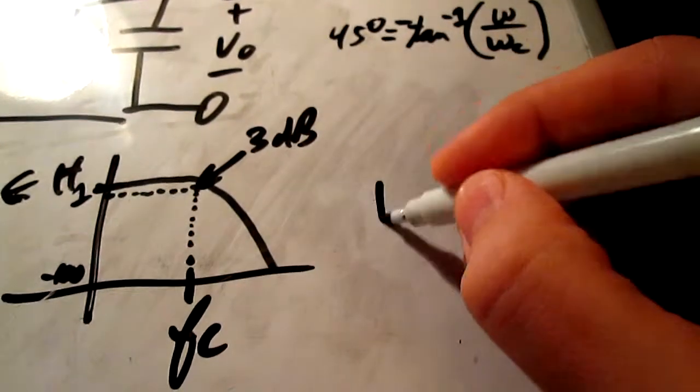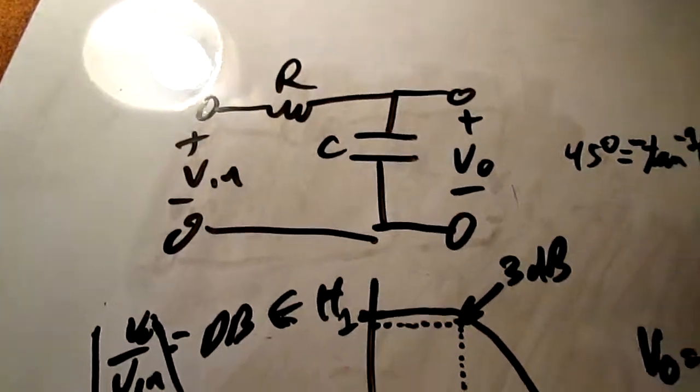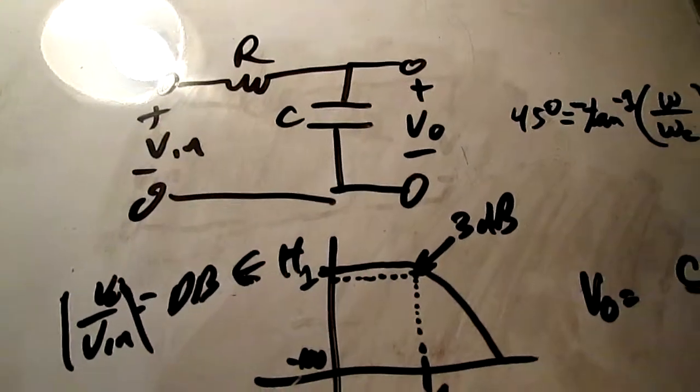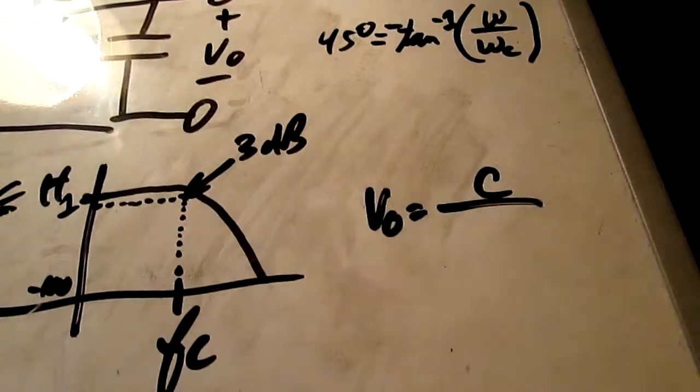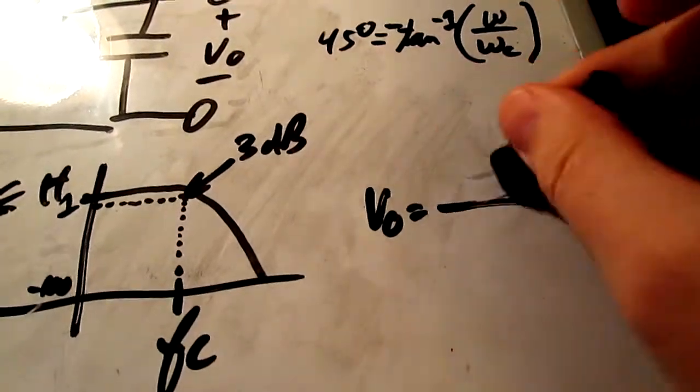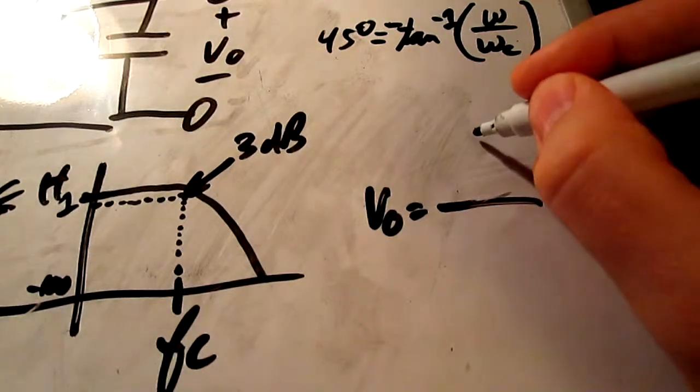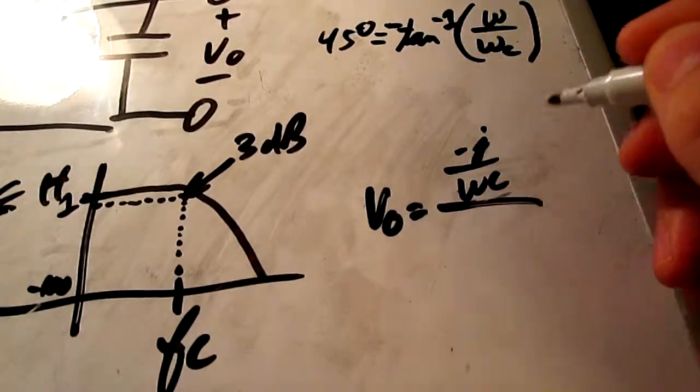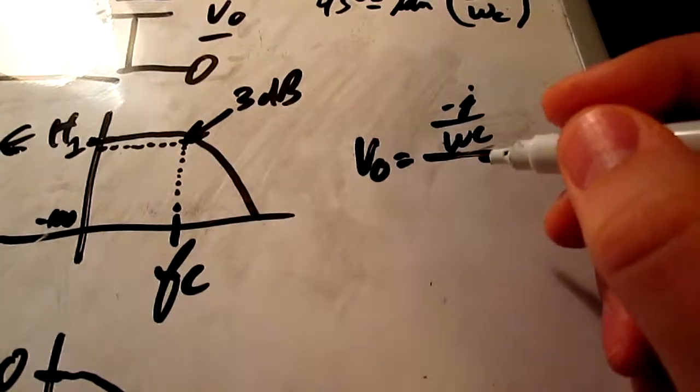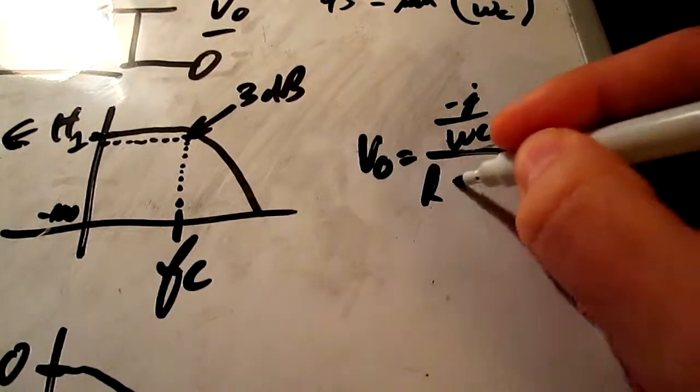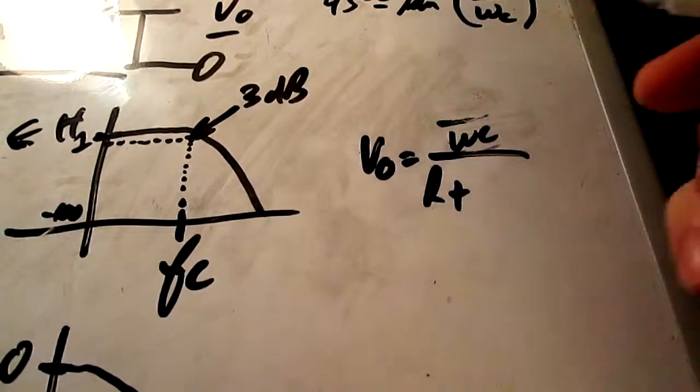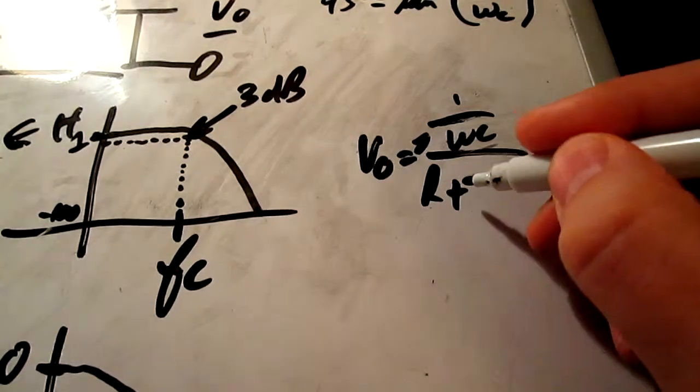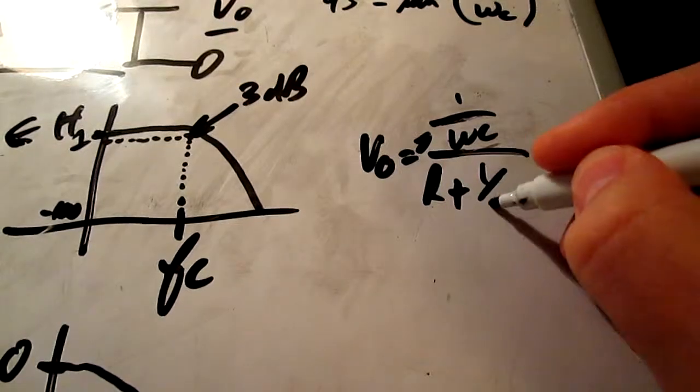No need to draw it out. V out equal to c over, well c, you need resistance, you need to work with the resistance of your capacitor. So negative j over omega c over r plus, you can write this as 1 over j omega c over r plus 1 over j omega c. You see that? It's just a simple voltage divider.